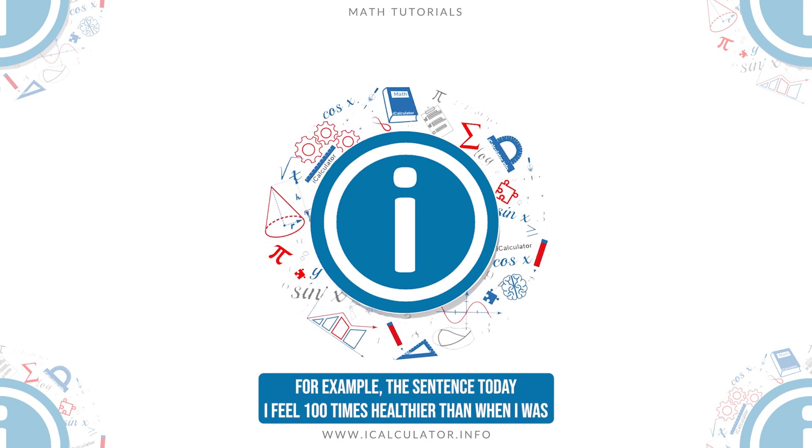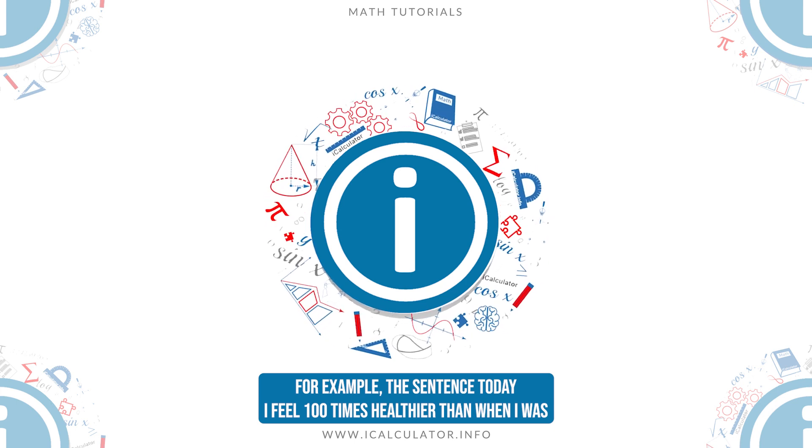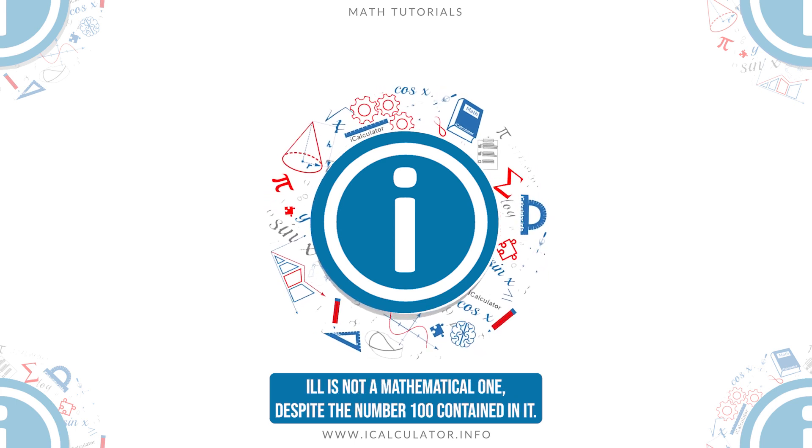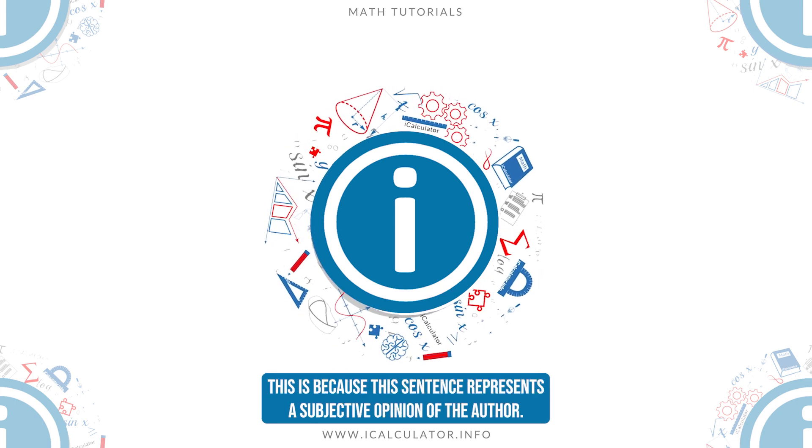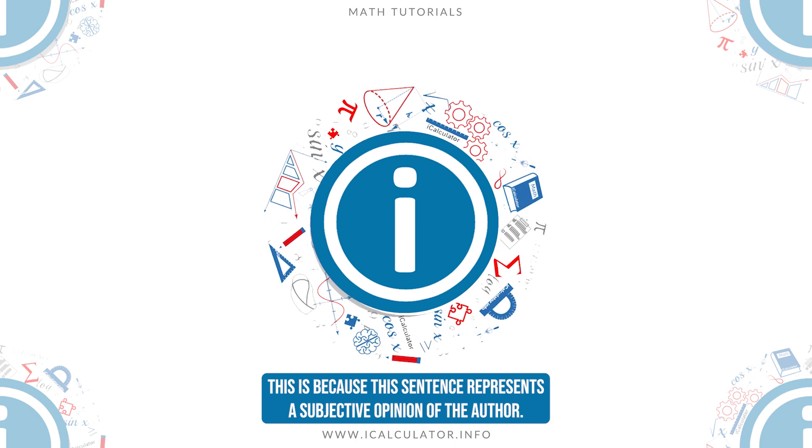For example, the sentence today I feel 100 times healthier than when I was ill is not a mathematical one despite the number 100 contained in it. This is because this sentence represents a subjective opinion of the author.